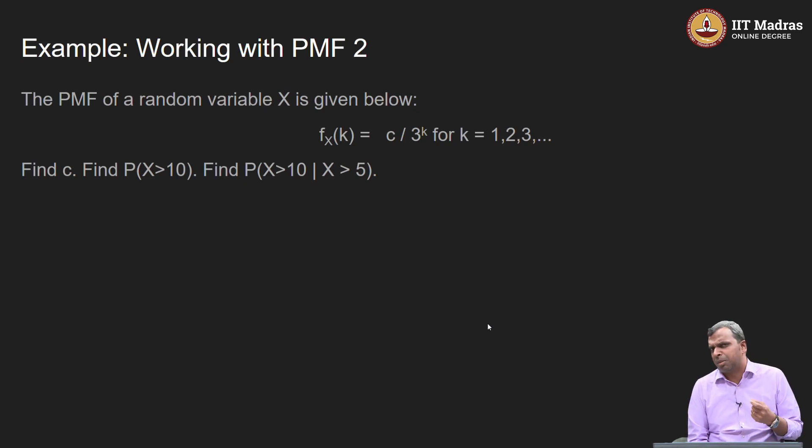There is one more example where things become slightly more complicated. These kinds of cases will appear also over and over again, one needs to be comfortable with this. Here is a PMF given, but notice this range here, it is not finite. This is what is called a countable case. It keeps on going 1, 2, 3, 4, you can just count it out. 1, 2, 3, 4 on and on and the PMF is given as c by 3 power k. First thing is what is this c?